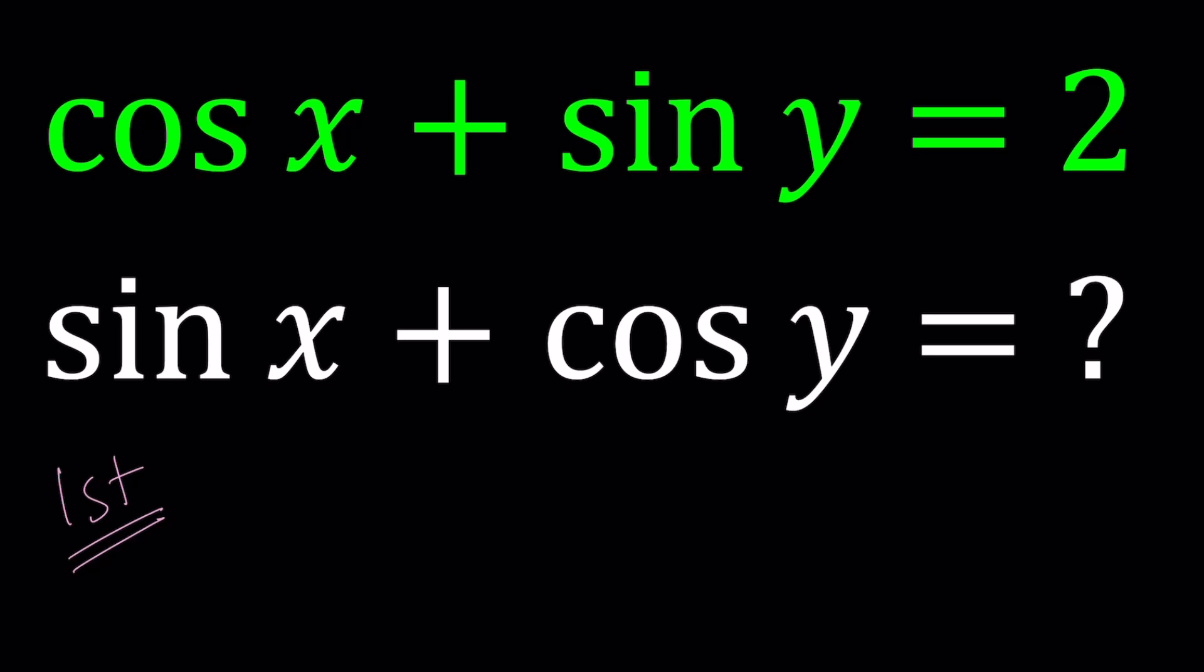But we don't know what the second expression is equal to. If we did know, then this would be a system of equations, and obviously it would be easier to solve for x and y. But we can still solve for it. Since we don't have an expression for the second one, I can go ahead and call this something like capital A, and then I'm going to square both sides.